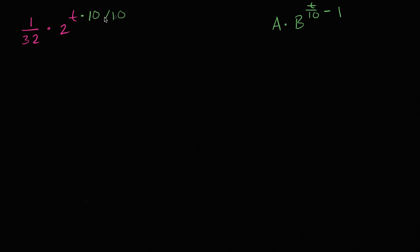So we can rewrite this as 1/32 times 2 to the t over 10 times 10. So we got a t over 10 over here, but then I have this times 10.